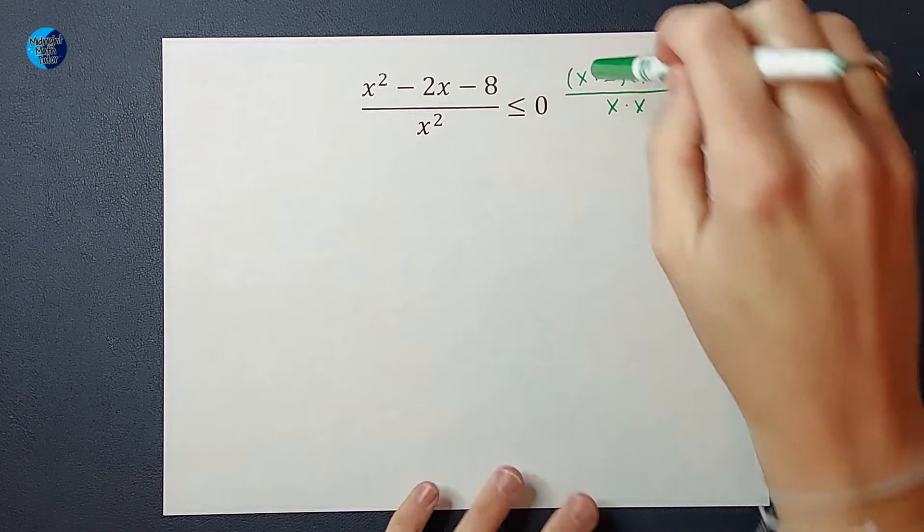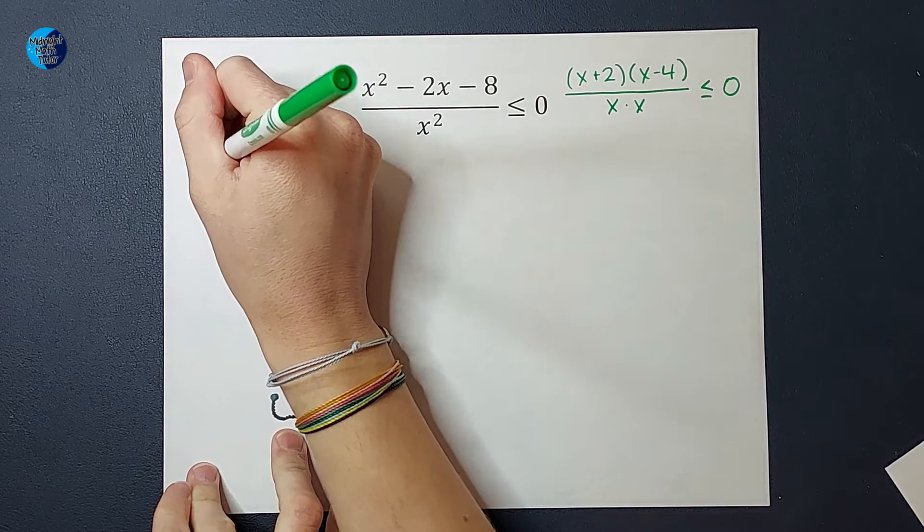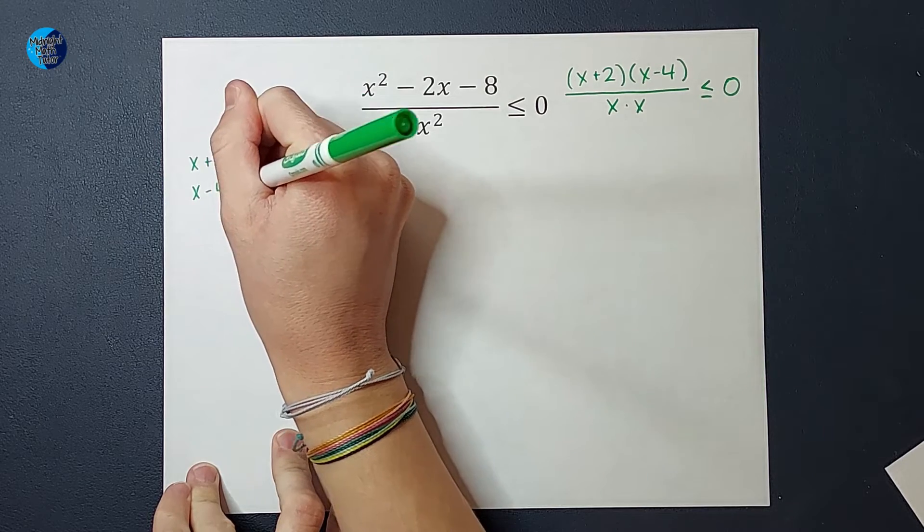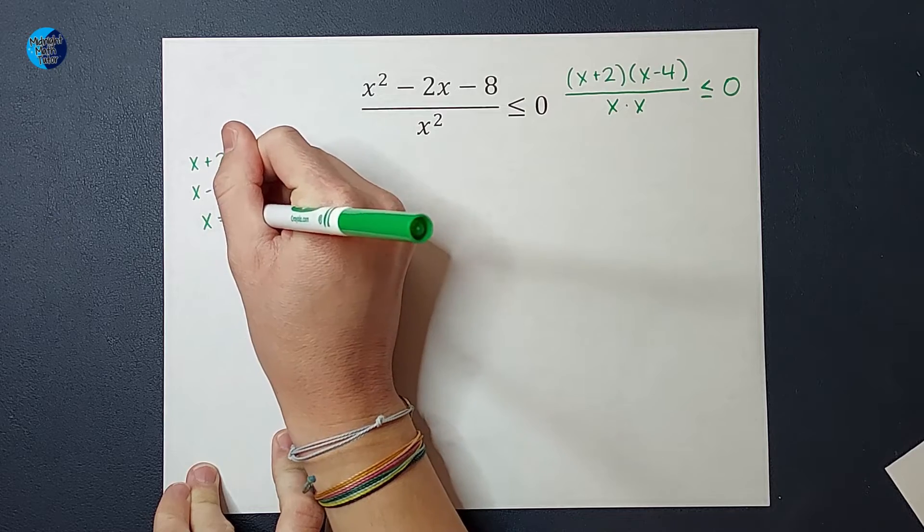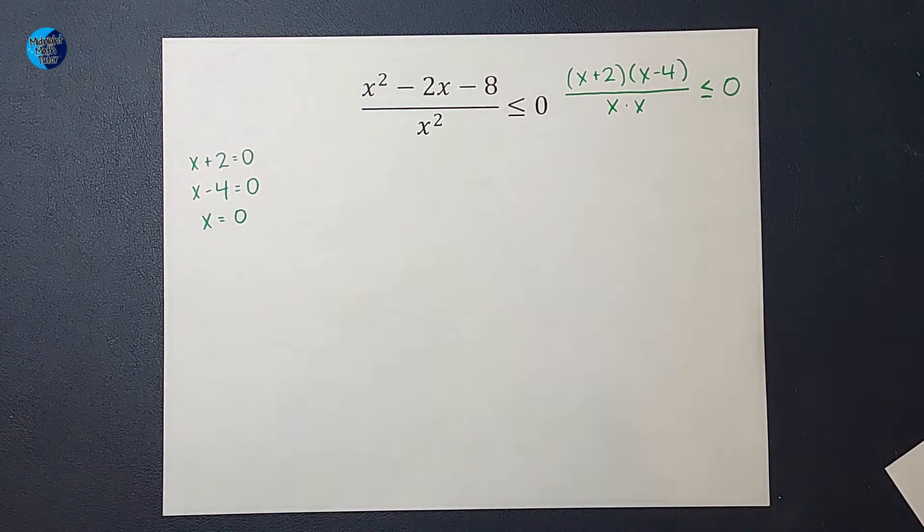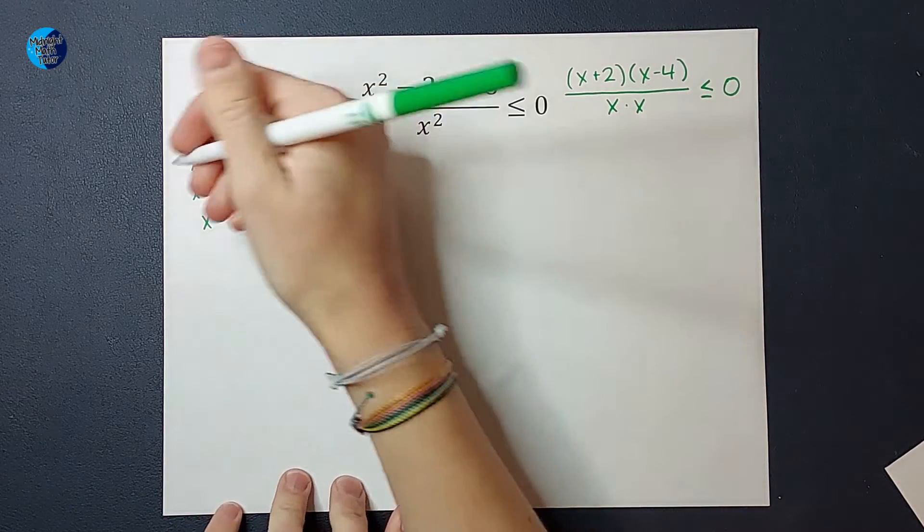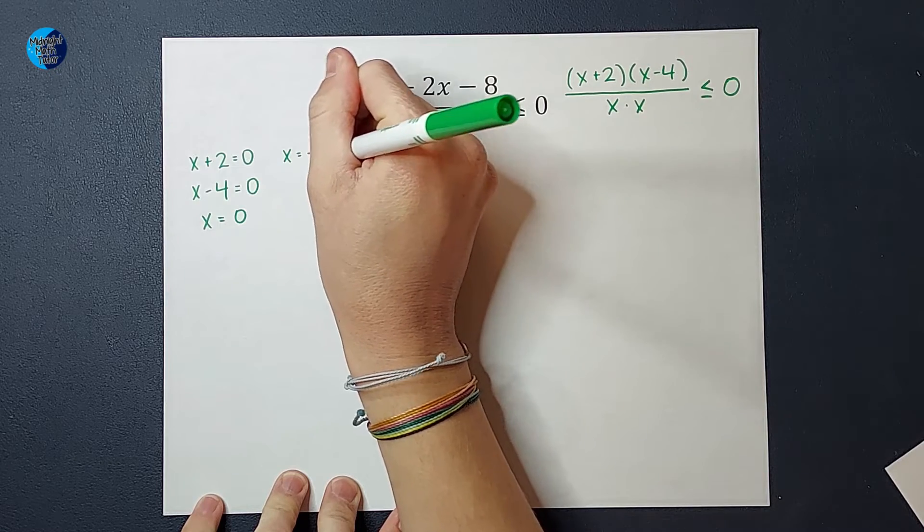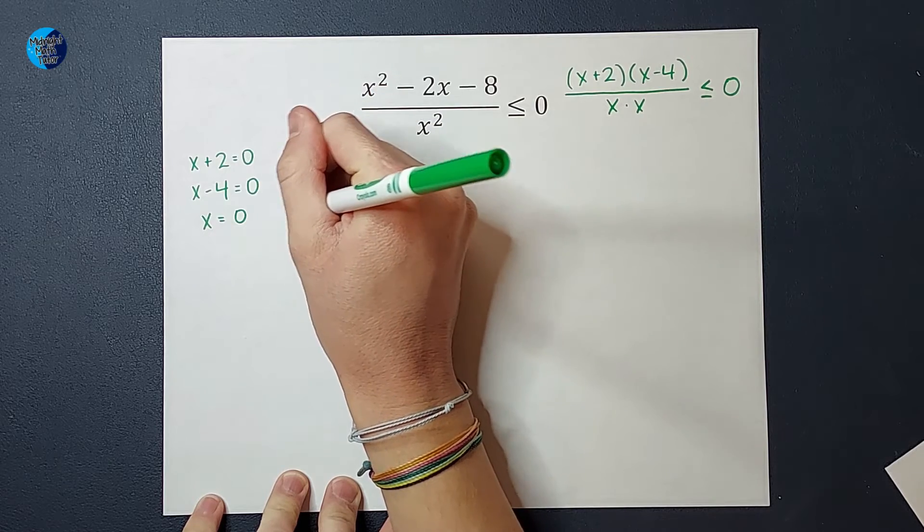From here, we are going to take each of these and set them equal to zero. So I'm going to have x plus 2 equals zero. X minus 4 equals zero. And x equals zero. Now, I could write that twice since there are two x's, but I don't have to. From here, I'm going to solve these. So on this one, I would subtract 2 from both sides and get x equals negative 2. Add 4 to both sides, get x equals 4. And then that one's still just x equals zero.